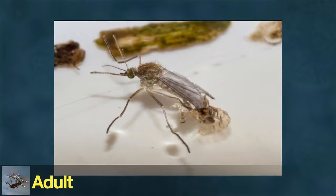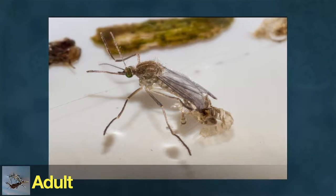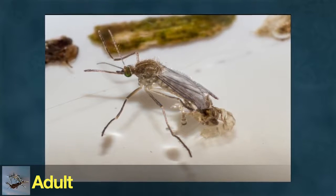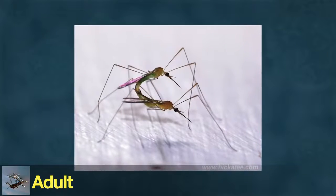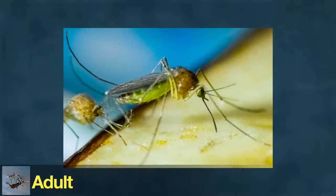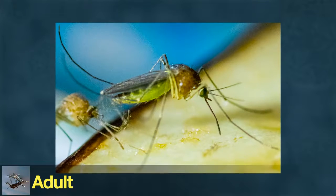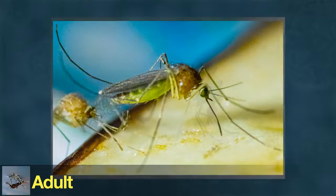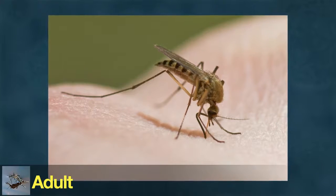After 1 to 4 days, the mosquito splits out of the skin it had as a pupa and emerges as an adult. Shortly after, it mates. Both male and female mosquitoes feed on nectar from plants, but females also need to drink blood from animals, such as humans, in order to make eggs.